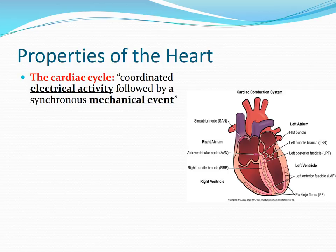You can see in the image where we start with the SA node — the electricity travels down the heart, and as the electricity moves down the heart, different parts of the heart contract in a synchronous mechanical event so that blood is moving through the heart effectively. So the cardiac cycle is that electricity followed by a mechanical squeezing or contraction.